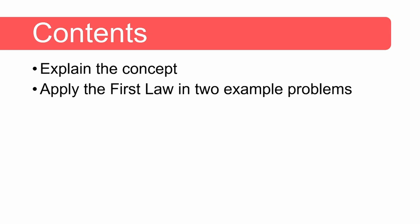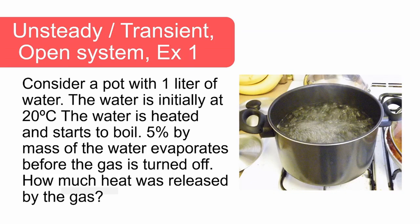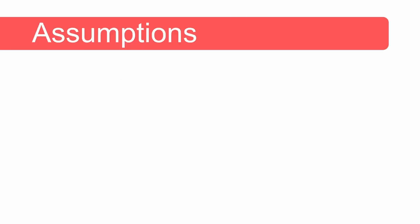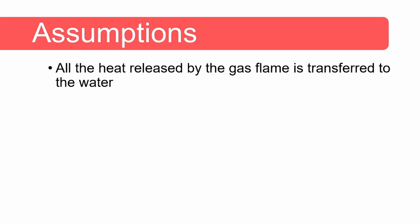Here is our first example. Consider a pot containing one liter of water initially at 20 degrees Celsius. The water is heated and starts to boil. Five percent by mass of the water evaporates before the gas is turned off. The question is: how much heat was released by the gas?